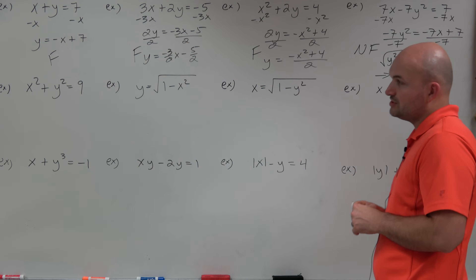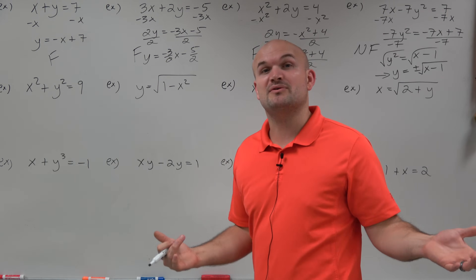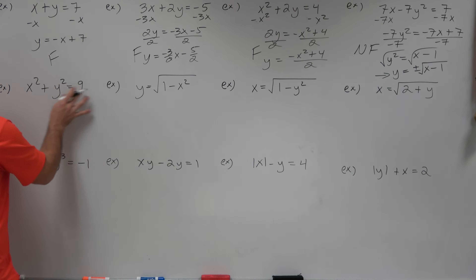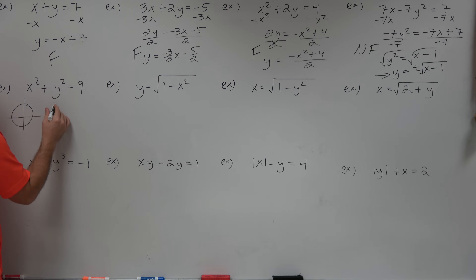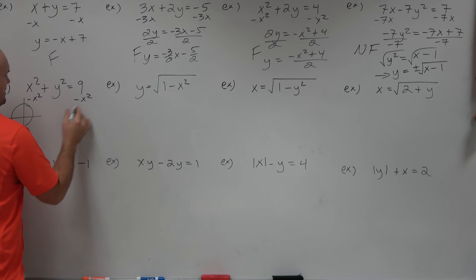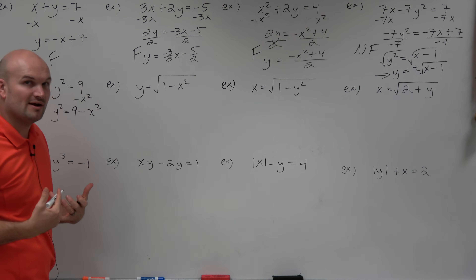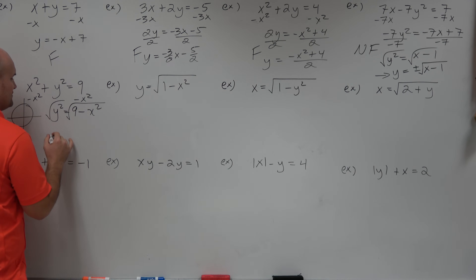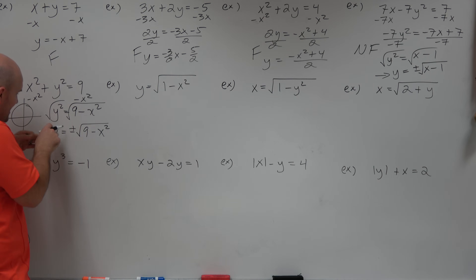Next we have x squared plus y squared equals 9. You may remember from geometry that this is the equation of a circle with radius 3, which doesn't pass the vertical line test. If we work through it algebraically — subtract x squared on both sides, giving y squared equals 9 minus x squared — and undo the squaring, we get y equals plus or minus the square root of 9 minus x squared. Since y is not unique, that is not a function.